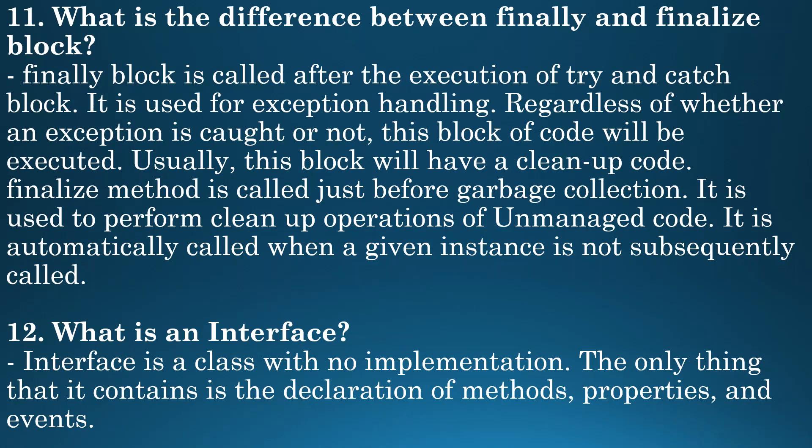Next question: what is the difference between finally and finalize block? Finally block is called after the execution of try and catch block. It is used for exception handling — regardless of whether an exception is caught or not, this block will be executed and usually contains clean-up code. Finalize method is called just before garbage collection. It is used to perform clean-up operations of unmanaged code and is automatically called when a given instance is not subsequently called.